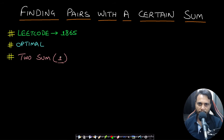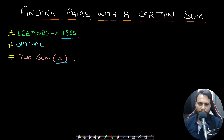Hello guys, welcome back to TakeDose. In this video we will look at the 'Finding Pairs with a Certain Sum' problem, which is LeetCode number 1865. A good problem to solve before this is the Two Sum problem.